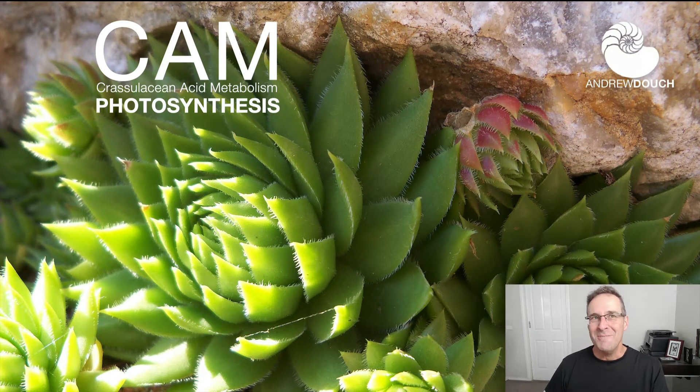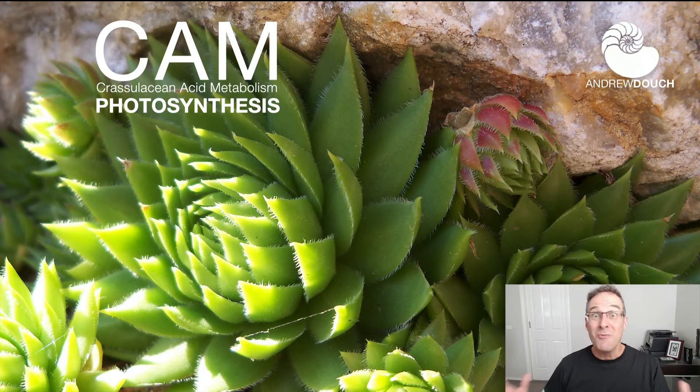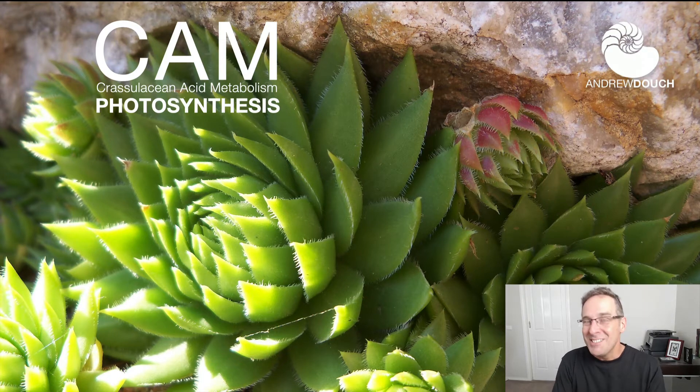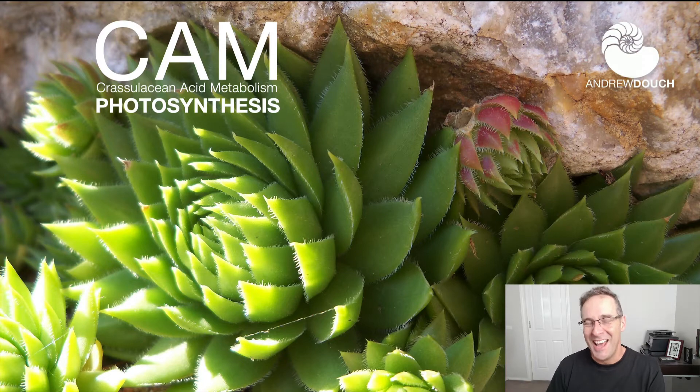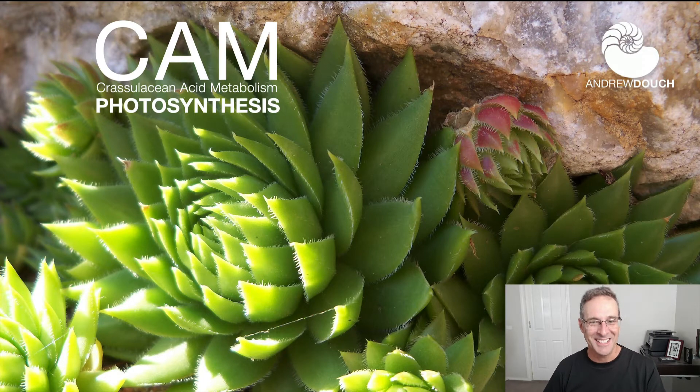In biology, although there's a lot of really big words and big terms and acronyms, usually they do a pretty good job of describing the thing that they name. But this is not one of those occasions. CAM photosynthesis, crassulacean acid metabolism, is one of the stupidest terms in all of biology because there's no such thing as crassulacean acid.